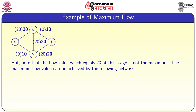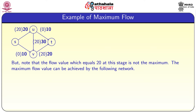The maximum flow value can be achieved by the following network. In this network, we define a new flow function. The flow value from s to u is 20 and from s to v is also 20. The flow value reaching t is 30. That is the maximum we can achieve for this network. So this last flow is not only a feasible flow — it is the maximum feasible flow.